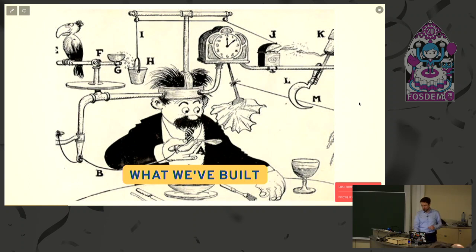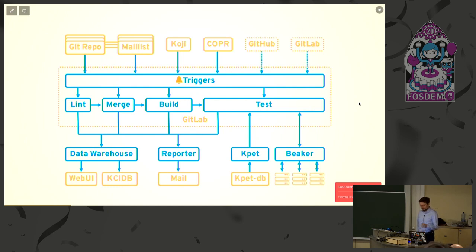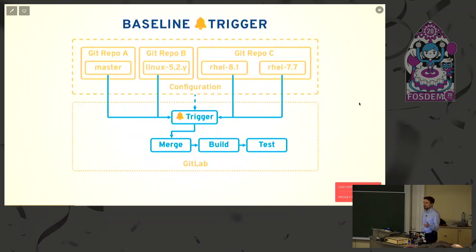So what we've built is something like this—this is simplified. I actually lost a slightly more complex slide on the plane because of how slides work. But never mind, this is the simple version. Normally, if you wanted to check just the changes in a Git repo being committed, that's kind of easy. We have a bunch of repos we track, check for new commits, and test those. That's fairly trivial.